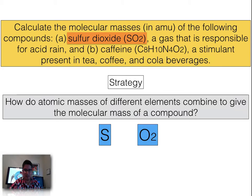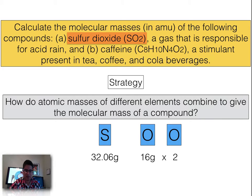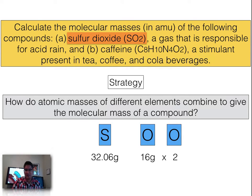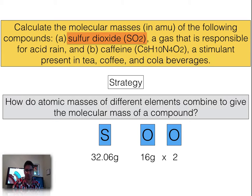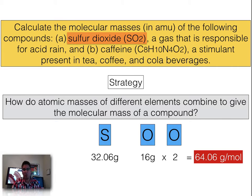For sulfur dioxide I have one sulfur and two oxygens. I look at the periodic table and find the molar mass of an individual sulfur atom, which is 32.06, and the molar mass of an oxygen atom is 16 — and I have two of those, so I multiply it by two. Then I combine these masses because I'm finding the molar mass of the molecule, not just an individual atom. That combined mass is 64.06 grams per mole.